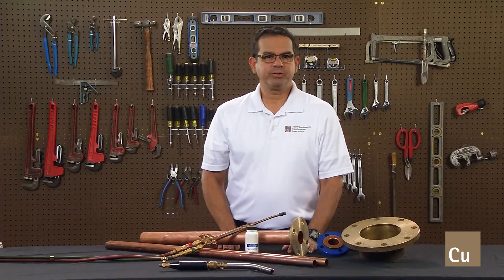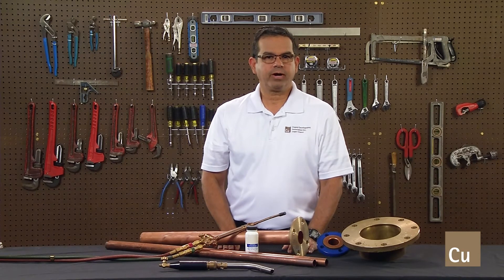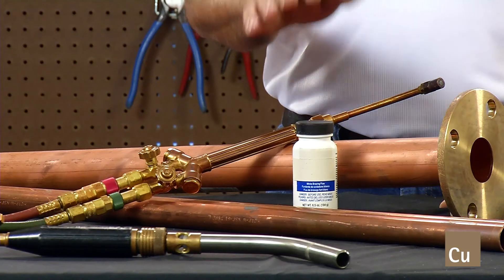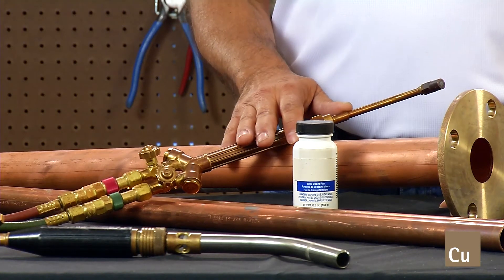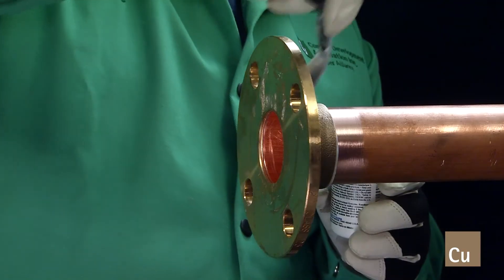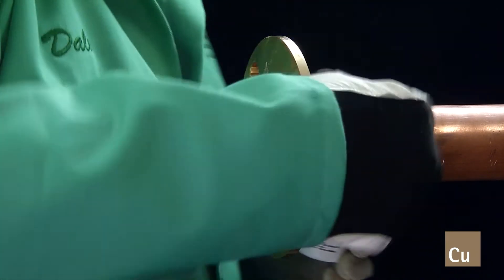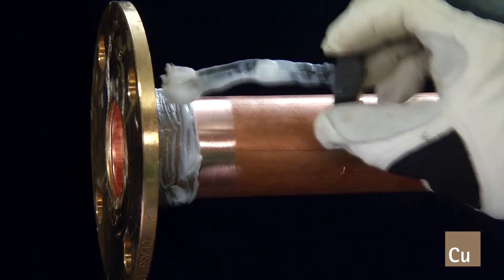But what if you're brazing a copper alloy flange? The same steps we just covered in the soldering portion are also required for a braced joint. However, a brazing flux and a higher temperature torch like oxy-acetylene is necessary. In addition, apply brazing flux on the outside of the flange socket, which will limit the possibility of overheating it.